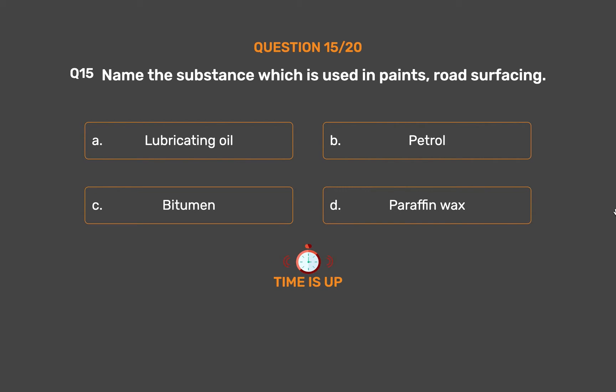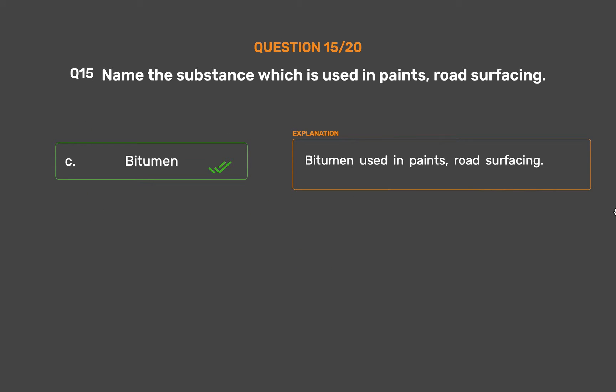The correct answer is Option C: Bitumen. Bitumen is used in paints and road surfacing.